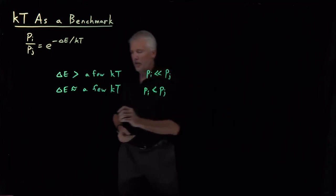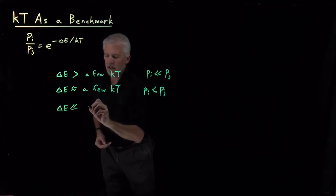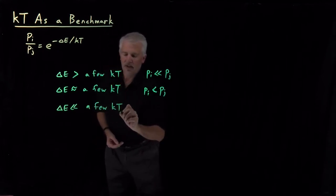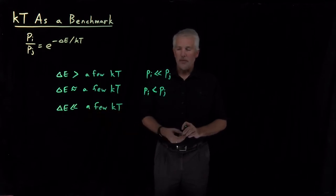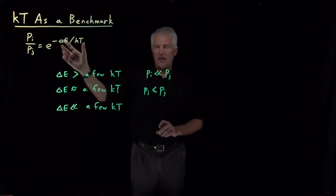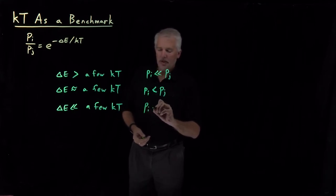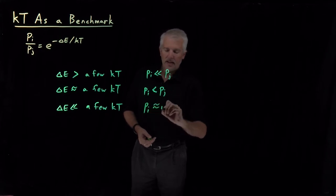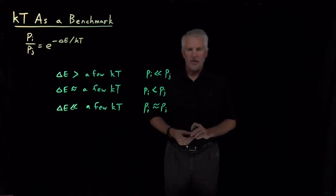On the other extreme, let's say that state I is still the higher energy state, but the difference in energy between state I and state J is small compared to kT. So that ratio ΔE divided by kT is quite small, much less than one. That means the exponent is e to the minus some small number — e to the minus 0.01, e to the minus 0.001. E to a small negative number is a value close to one, so the probability of being in state I is about the same as the probability of being in state J — a little less, but for most practical purposes the probabilities are similar.